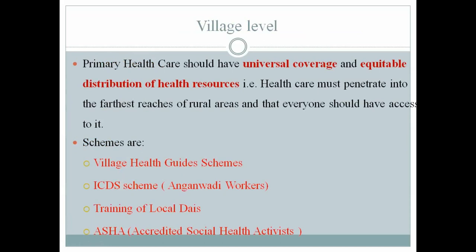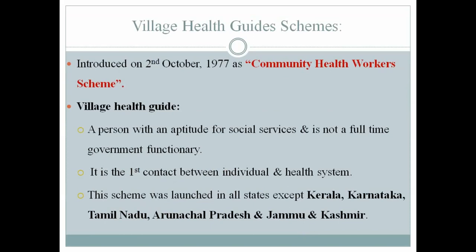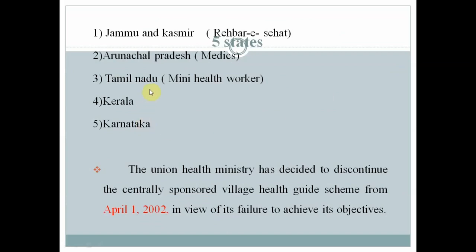At the village level there are several schemes: ICDS, local dais, and ASHA workers (Accredited Social Health Activists). The village health guide scheme was started in 1977 under the community health worker scheme. This person is not a full-time government employee but serves as the first contact between the individual and the health system. It was launched in all states except Kerala, Karnataka, Tamil Nadu, Andhra Pradesh, and Jammu & Kashmir, where existing programs were already in place. The Union Ministry discontinued this program in 2002 and replaced it with the ASHA program.